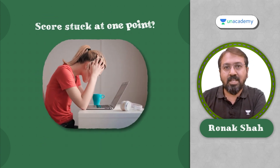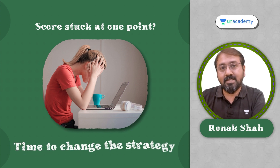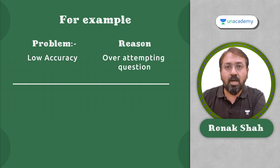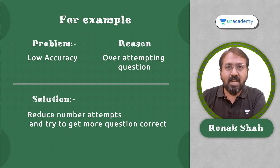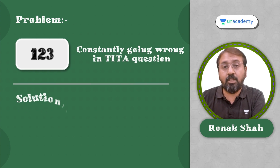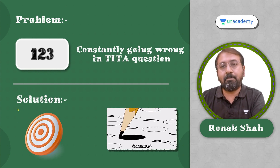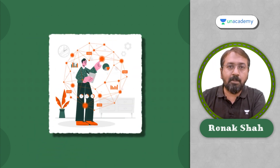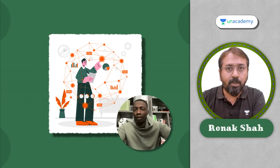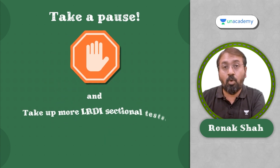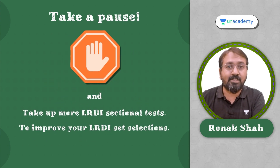If your mock test scores are stuck at one particular point, it's time to change the strategy. For example, if your accuracy is low, it indicates that you are over-attempting questions — try to reduce the number of attempts and get more questions correct. Similarly, if you are constantly going wrong on TITA questions, you can either improve your accuracy or pick more MCQ-type questions. If you observe that you are constantly picking wrong LRDI sets and leaving them midway, take a pause and attempt more LRDI practice tests to improve your LRDI set selection strategy.